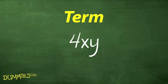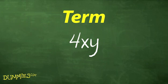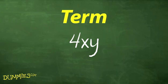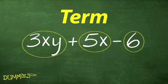A term, such as 4xy, is a grouping of one or more factors, which could be variables, numbers, or both. Multiplication is the only thing connecting the number with the variables. Addition and subtraction, on the other hand, separate terms from one another. For example, this expression has three terms.